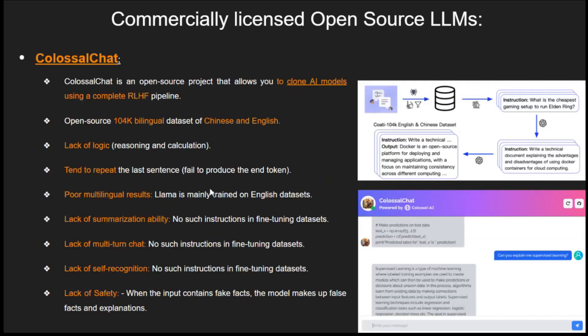After that, we have Colossal Chat. Colossal Chat clones AI models to get the best possible response out of them. It also lags in the completion of large output and input data with poor multilingual results. It also lags in the summarization ability of conversations, which highly impacts the overall performance if it is combined with any other large language model that also has particular limitations.